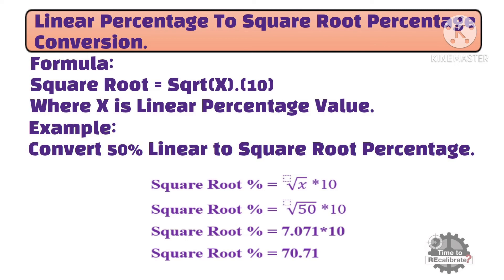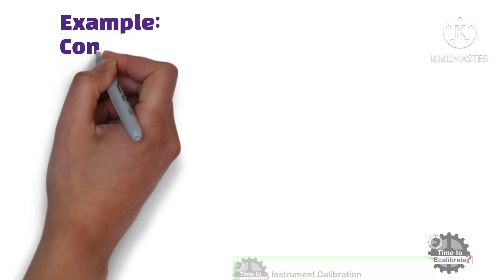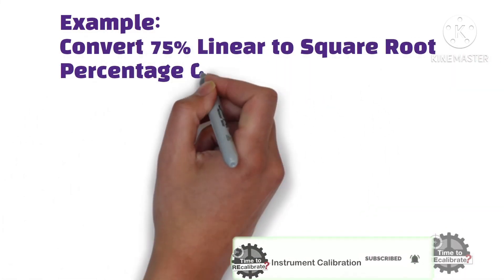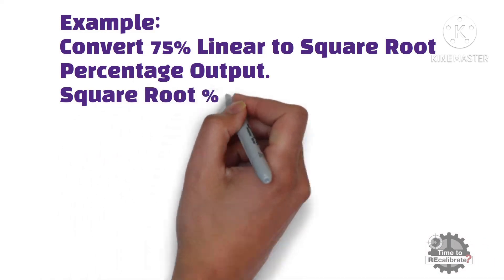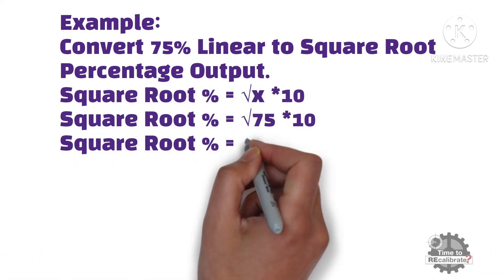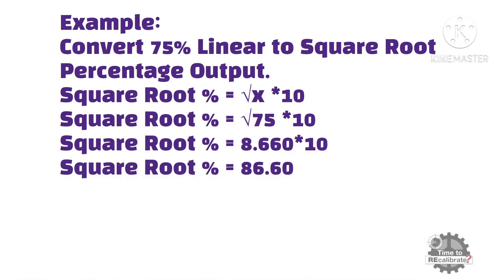It is simple math calculation. Let's go to the next example: convert 75% linear input to square root percentage output. Put 75 into the formula: the square root of 75 is 8.660, multiplied by 10, which gives 86.60. So the square root output is 86.60 for a 75% linear input.